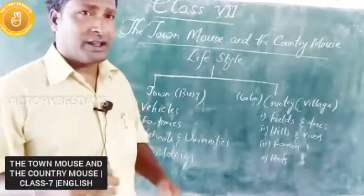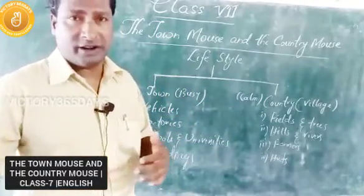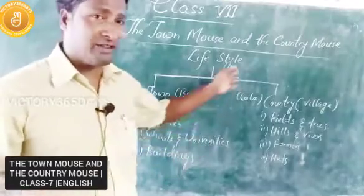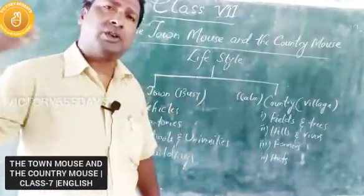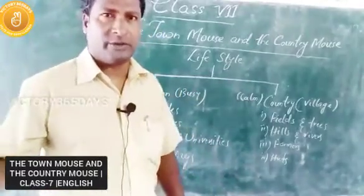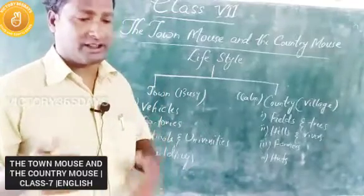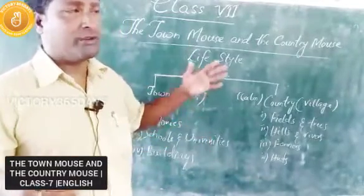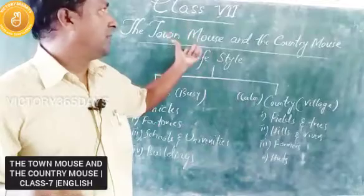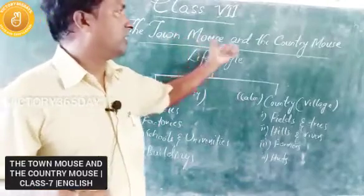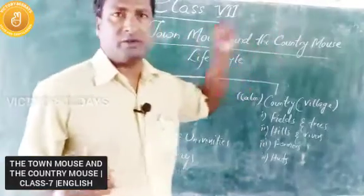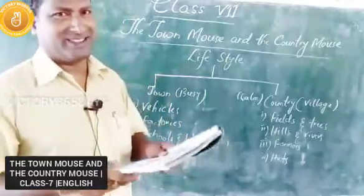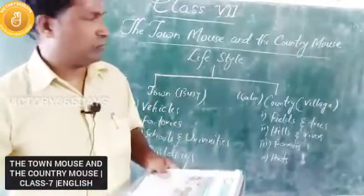City people like comfort, comfort zones, and facilities in cities. Whereas in the village, they have their own way of living life. That's what we expressed in this lesson through the examples of two mice. The plural of mouse is mice.